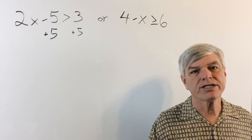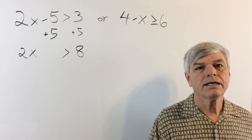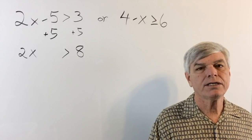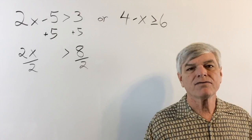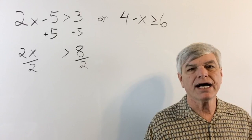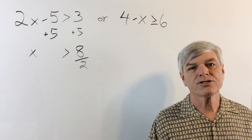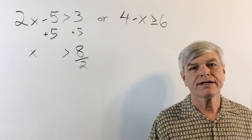In the first equation, we're going to bring 5 to the other side, then divide 2x by 2 and do the same for 8. That isolates x, and x is greater than 4.